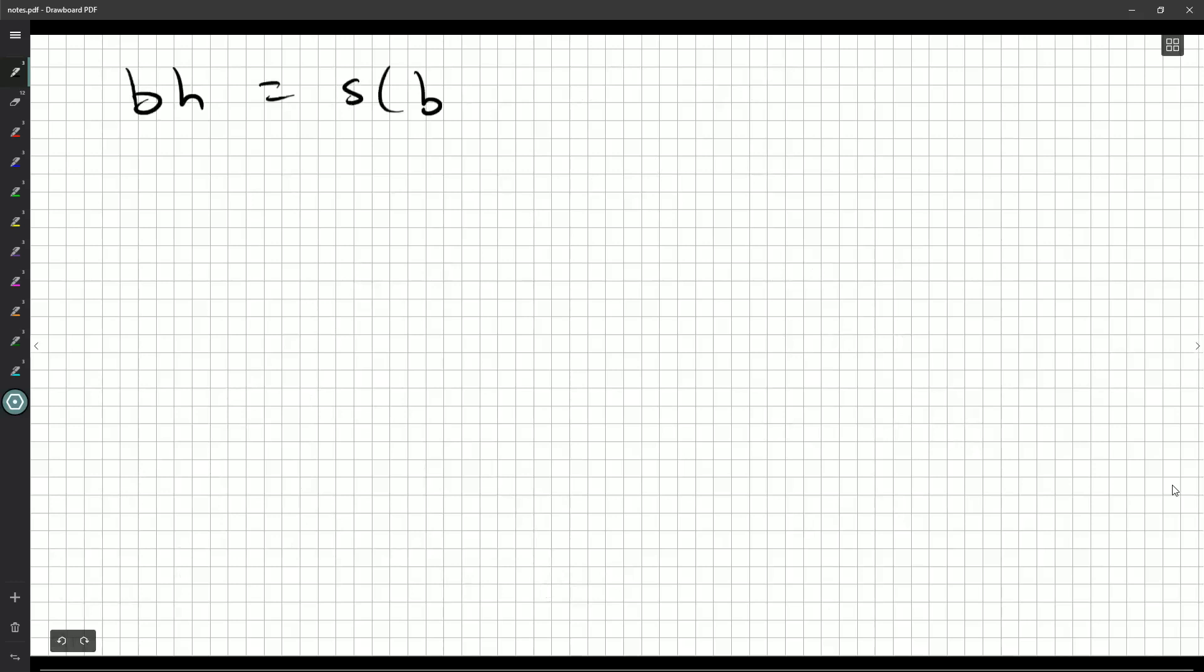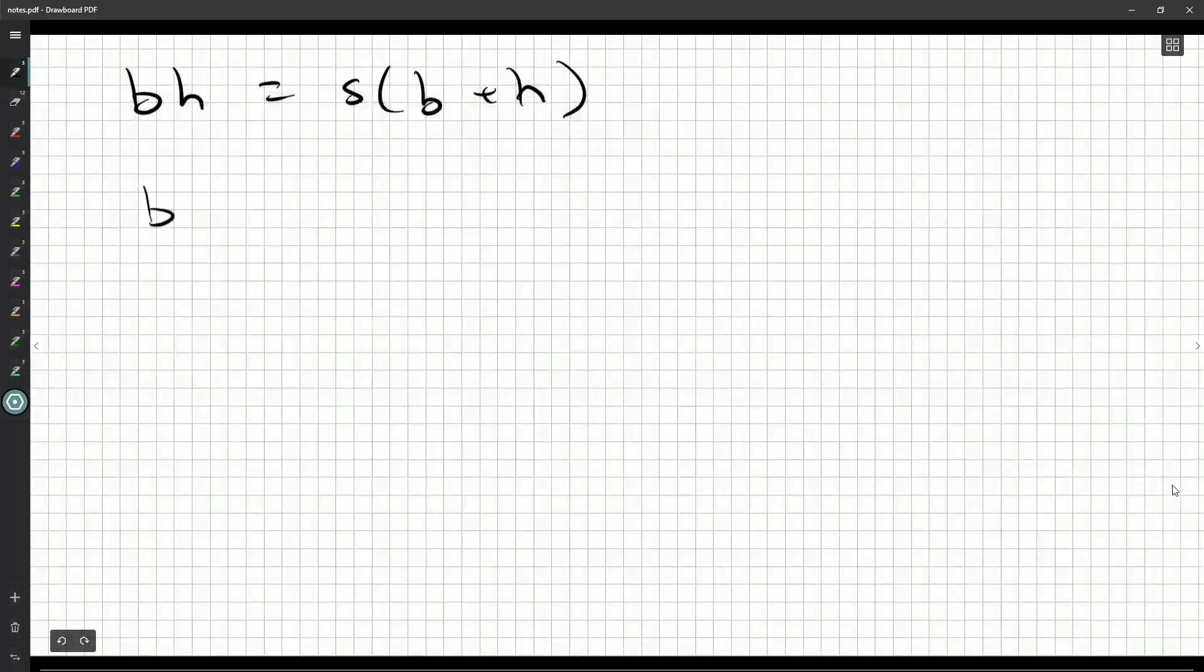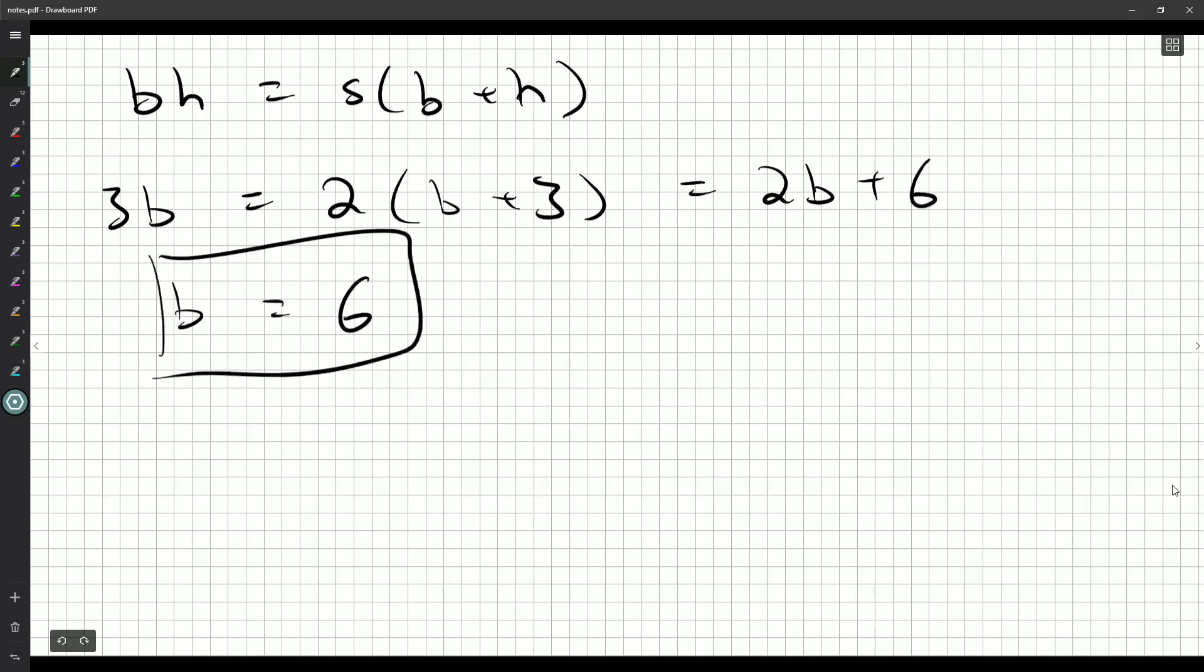And I think we can do the same sort of thing for b. Again, the same relationship holds. But what are we told in b? It's h and s. So 3b, 2b plus h. So that's 2b. h is 3. So 2b plus 6. Subtract 2b from both sides. B is equal to 6. There we go. So very short a and b. I'd expect both of those are probably worth two marks. Maybe one of them is worth three. But not much. And now let's...